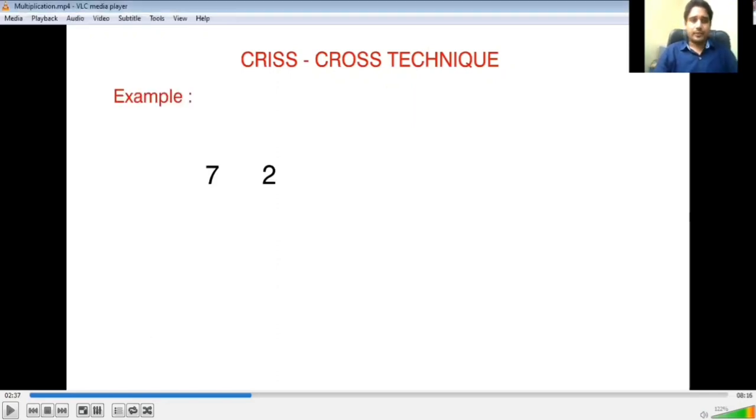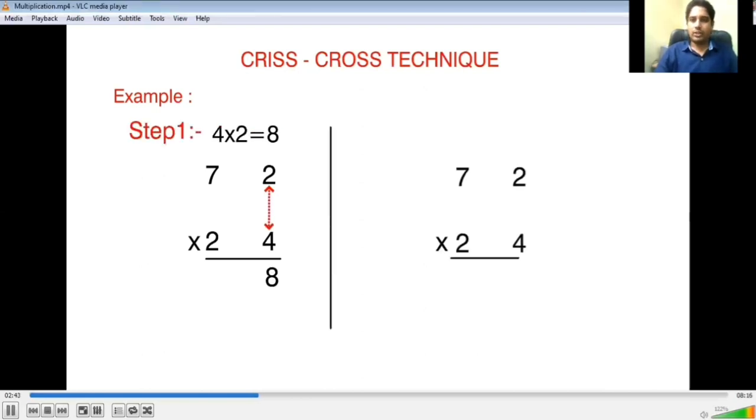First example: if we have to multiply 72 and 24. Step one - there are three steps in this particular process where we have two digit numbers and another two digit numbers. So here we have three steps. Step one: 4 and 2 will get multiplied first. 4 into 2 is 8, and we have taken 8.